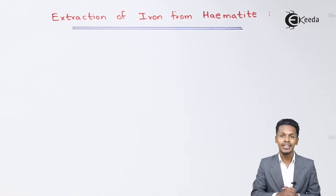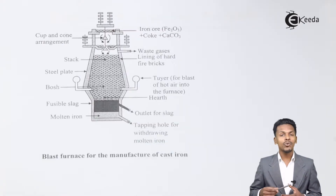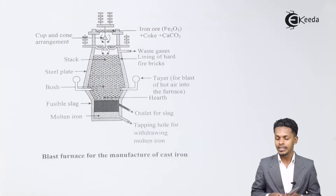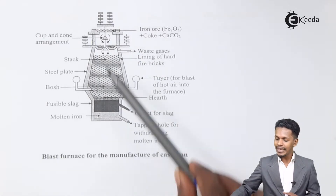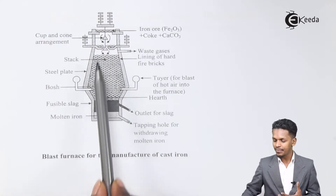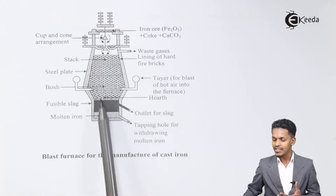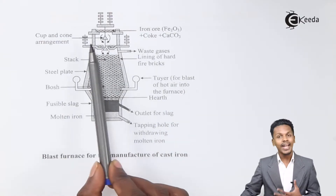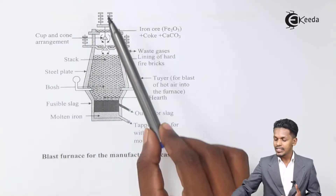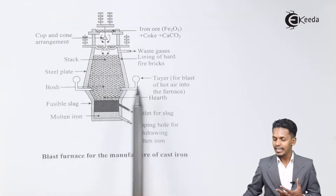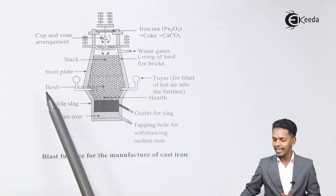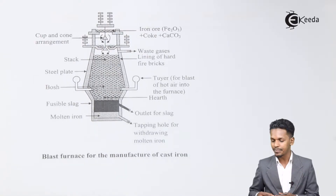Now let us understand what is actually a blast furnace. A blast furnace is basically a 25-meter-height furnace where we can find three regions: the stack, the bosh, and the hearth. It is narrow at the top, wider in the middle, and again narrow at the bottom. It is 5 to 10 meters in diameter, and in these regions the reactions take place.